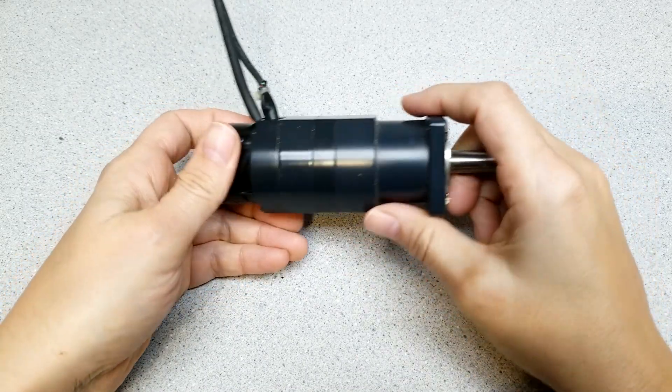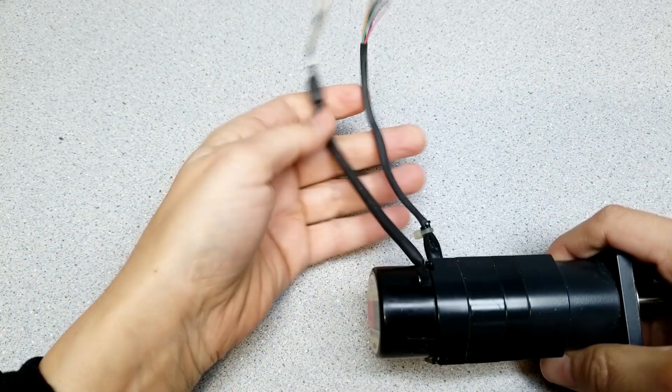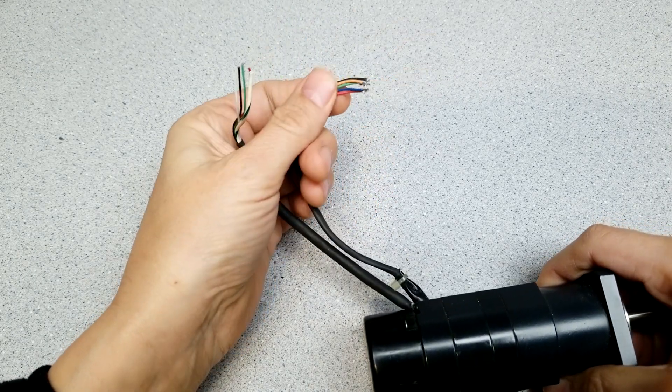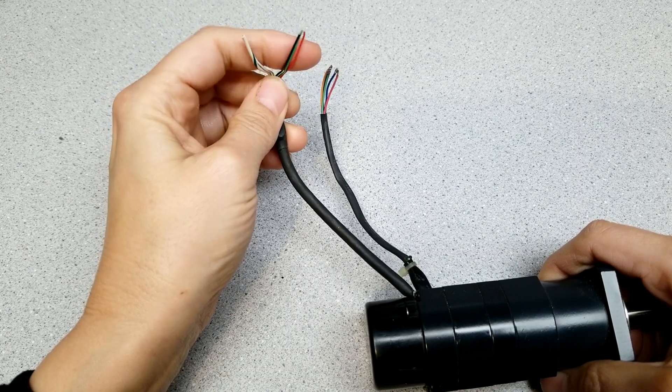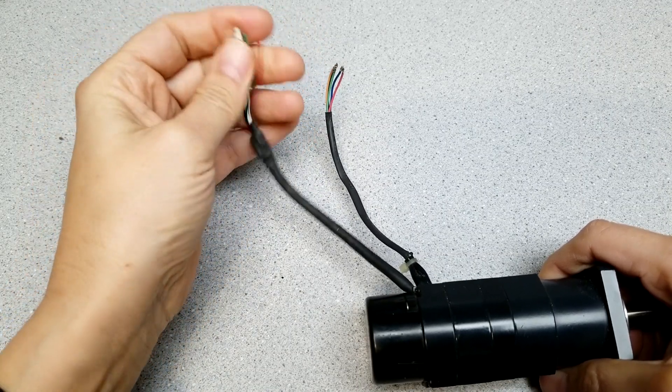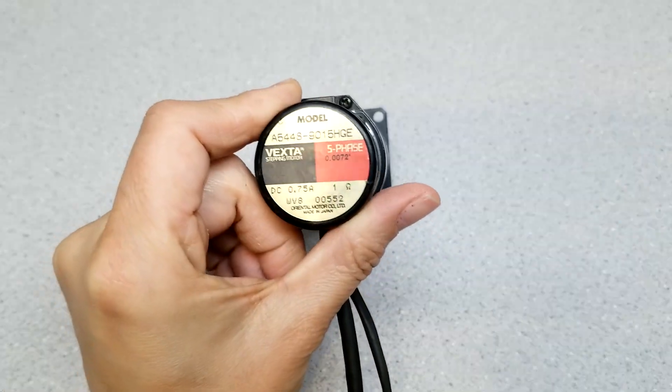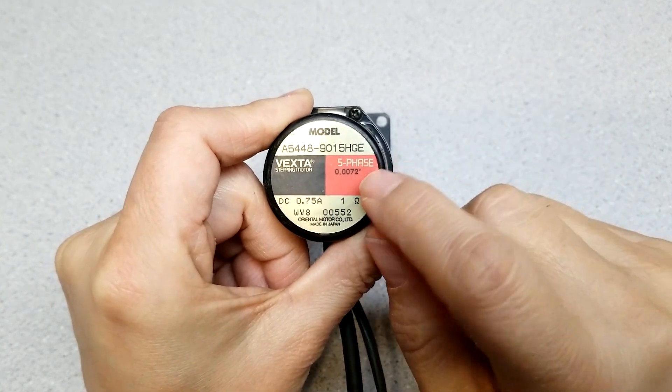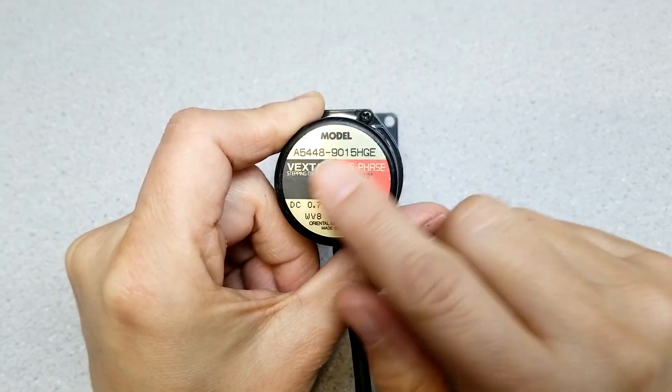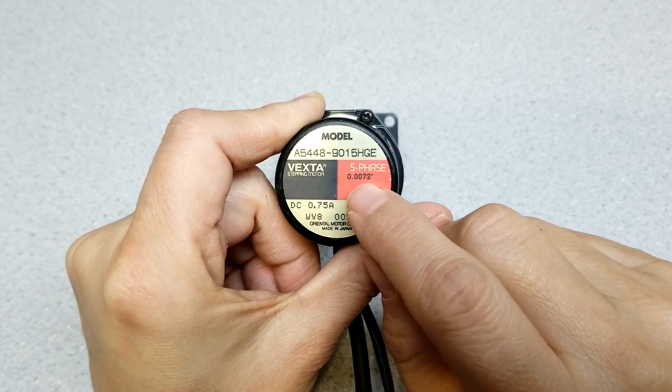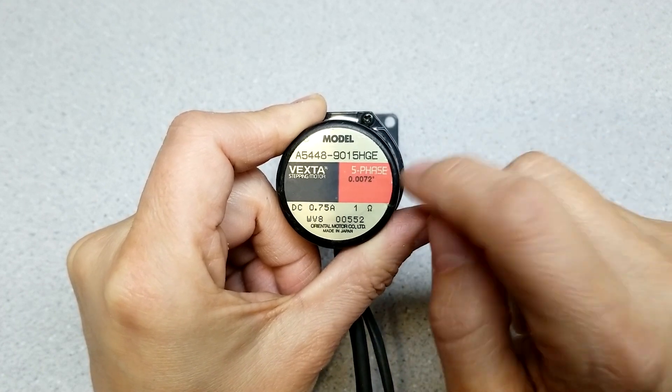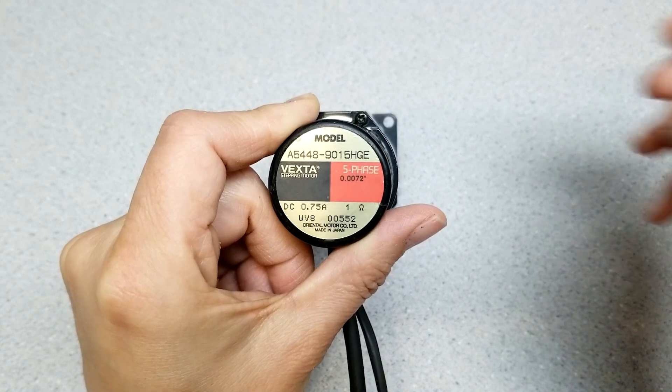And you can see these motors were five phase and there was an optical pickup on this for optical feedback. For those of you playing along at home, it's a five phase stepper motor and with this gear reduction, each step is 0.0072 degrees. And so that's pretty small.